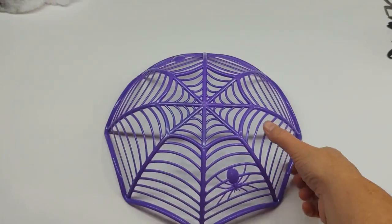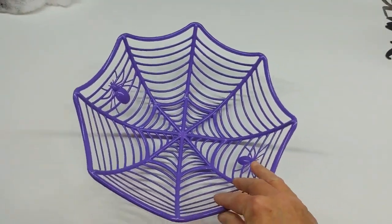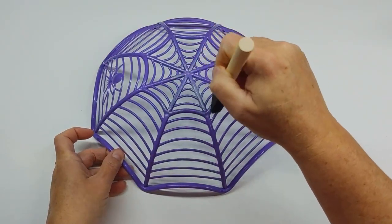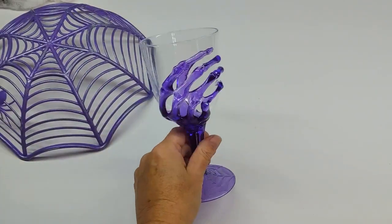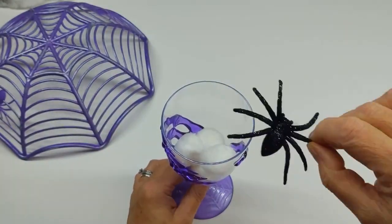The third DIY, I took a candy dish from Dollar Tree and painted a little bit of silver all over. Then I took a goblet, also from Dollar Tree, and added cotton balls and a spider.